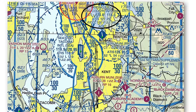Notice Auburn Municipal Airport located in the red circle. Since the airport is shown in magenta, that means Auburn Municipal is an uncontrolled airport with no operating control tower. All airports in blue have a control tower. Airports shown in magenta do not have a control tower.